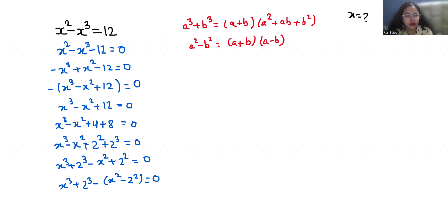So x plus 2 times x square plus 2x plus 4 minus x plus 2 times x minus 2 is equals to 0. Now x plus 2 times x square minus 3x plus 6 is equals to 0.